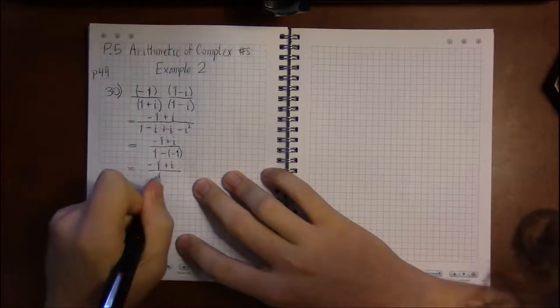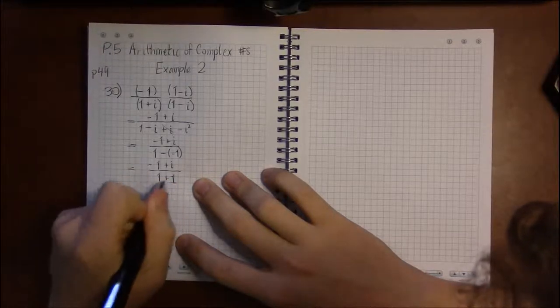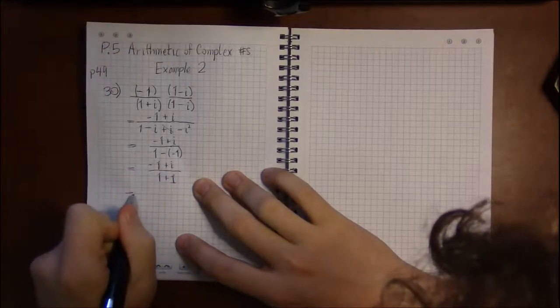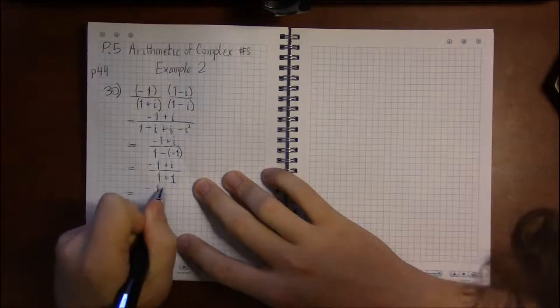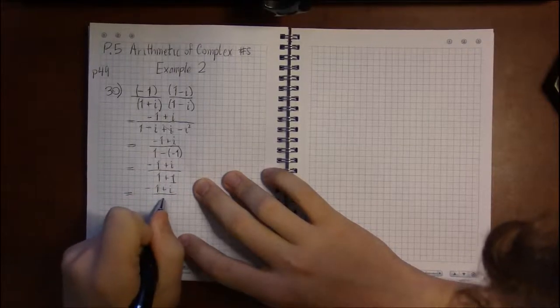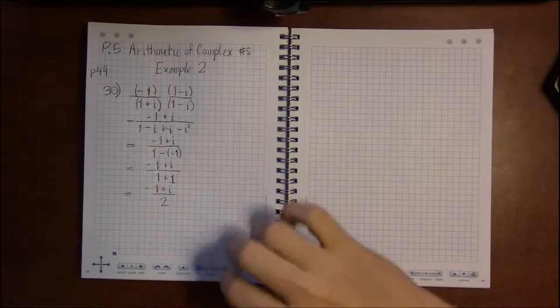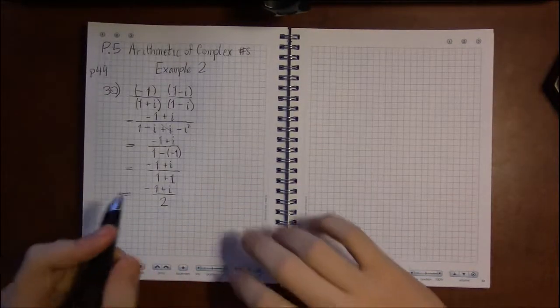On bottom we have 1 minus a minus 1, which is plus 1. So we have minus 1 plus i on top as usual, and 2 in the denominator. Now I'm fine with this answer.